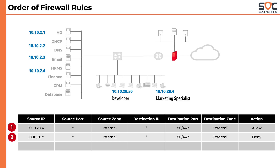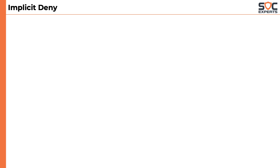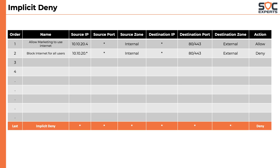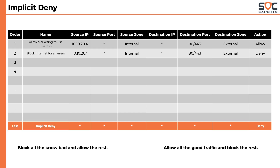With firewall rules, there is a concept of implicit deny, which means a last rule should be written that will implicitly deny all traffic not allowed by the rules above it. This helps in blocking all unknown traffic. The concept is basically this: either we can block all the known bad and allow the rest, or we can allow all the good traffic and block the rest. Since knowing all the bad traffic is impossible, it is better to allow what we know to be good through various rules and simply block the rest.